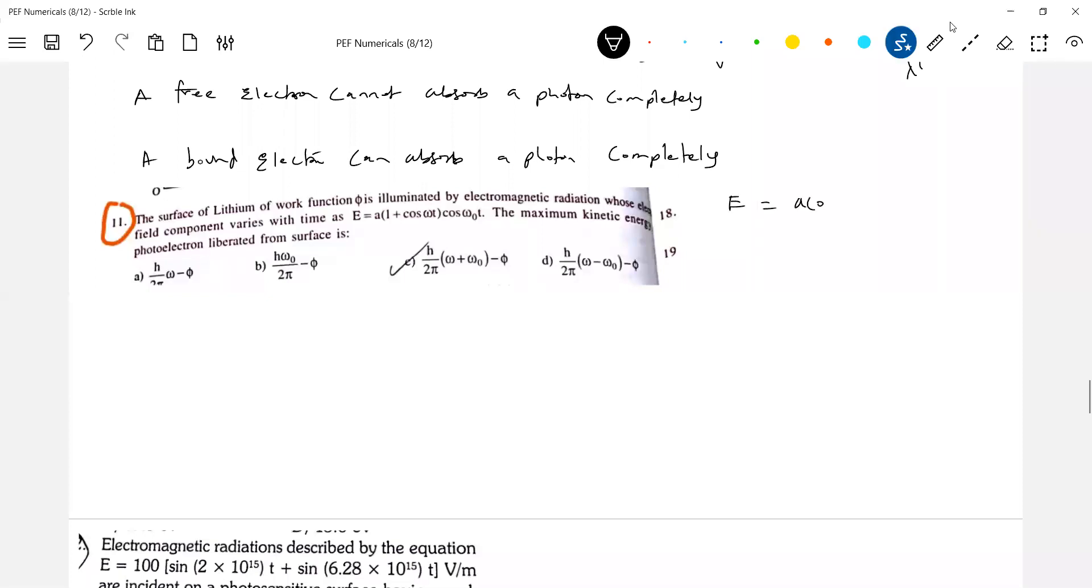E is equal to A cos omega not t. I think we'll get three components. Anybody? Cos C, Cos D formula. Cos of a plus b plus cos of a minus b. Cos of a plus b. By 2 will be there. Only this much. Cos of a minus b.